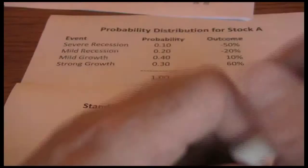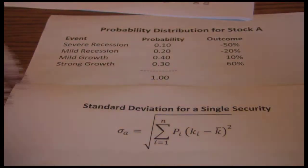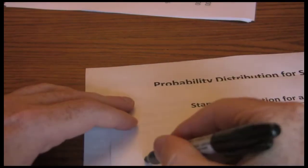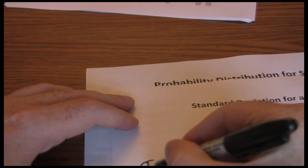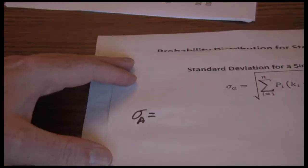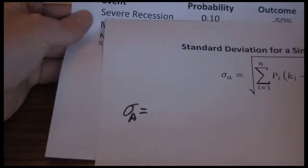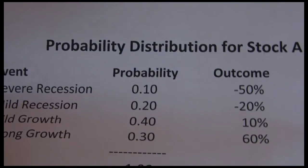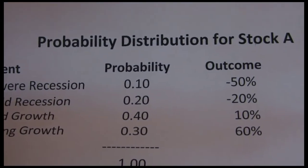So we're going to start calculating our standard deviation for stock A, and we want to start with the first possible outcome. It's going to be .1 probability and outcome negative fifty percent return.